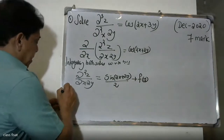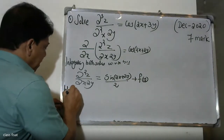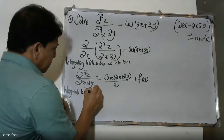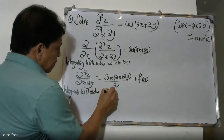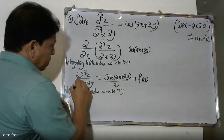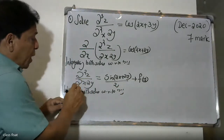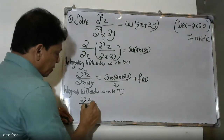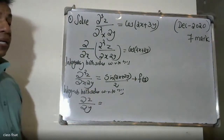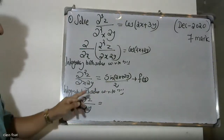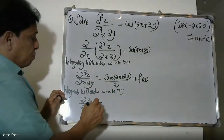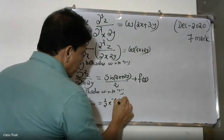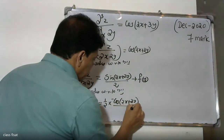Again, we integrate both sides with respect to x. Left-hand side is dou z by dou y. Right-hand side: integrating sin(2x + 3y)/2 gives 1/2 times minus cos(2x + 3y) divided by 2, which equals minus 1 by 4 cos(2x + 3y).